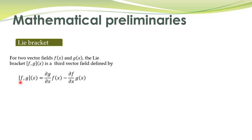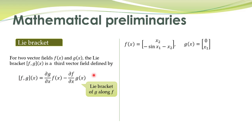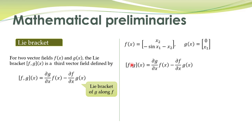We read it the Lie bracket of g along f. To demonstrate it, we take two vector fields f of x and g of x and we want to compute the Lie bracket of g along f, which is given by this definition over here.